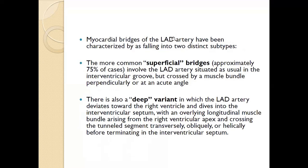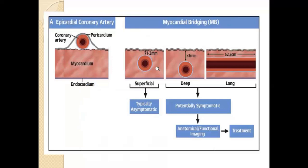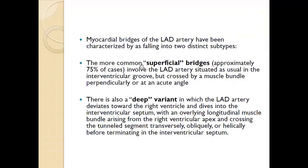Myocardial bridging is divided into two types: superficial bridging and deep bridging. Superficial bridging involves only one to two millimeters of myocardium overlying the coronary artery. Deep means more than two millimeters. Long myocardial bridging refers to when more than 2.5 centimeters of segment is involved. Superficial bridging is more common, seen in 75% of cases.